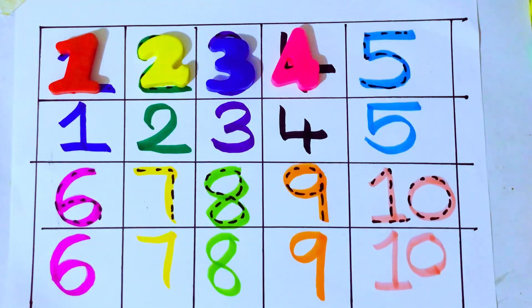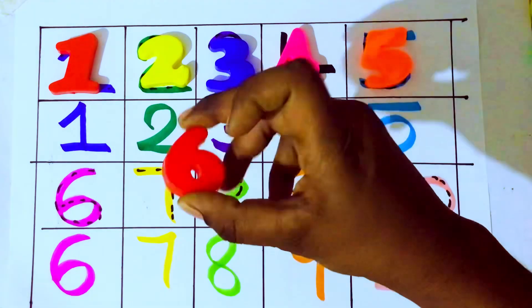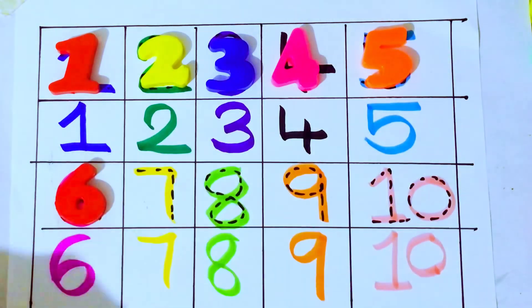Next 5. F-I-V-E. 5. 5 after 6. Which number kids? 6. S-I-X. 6.